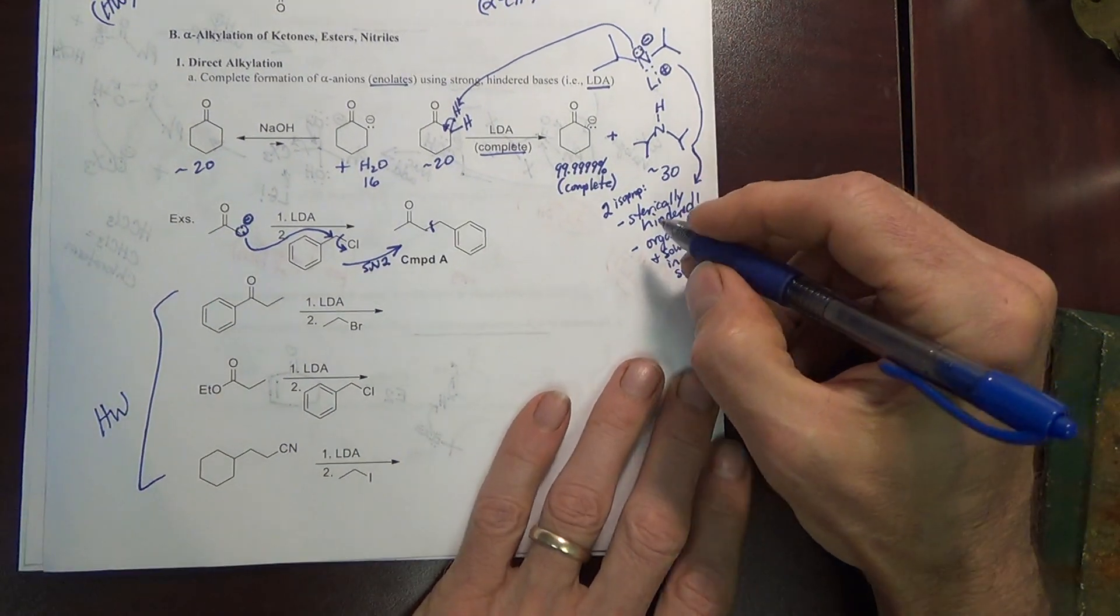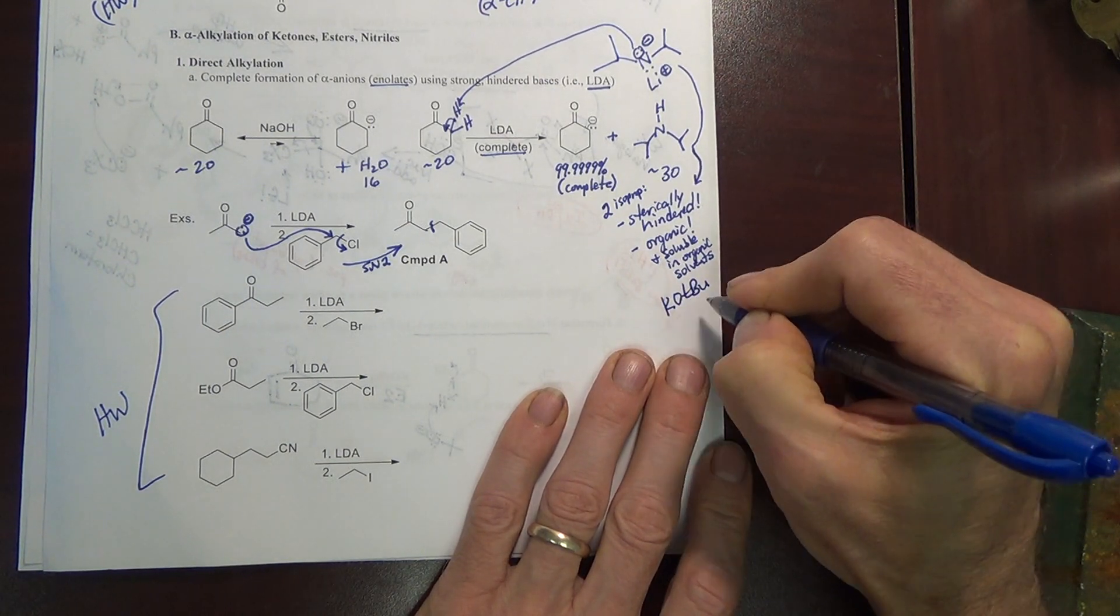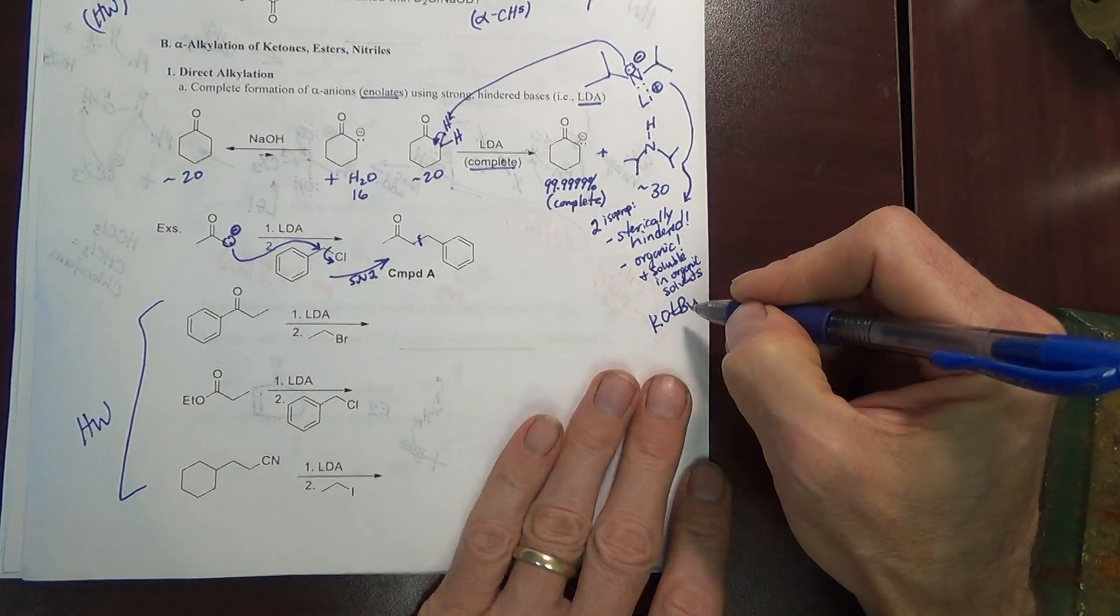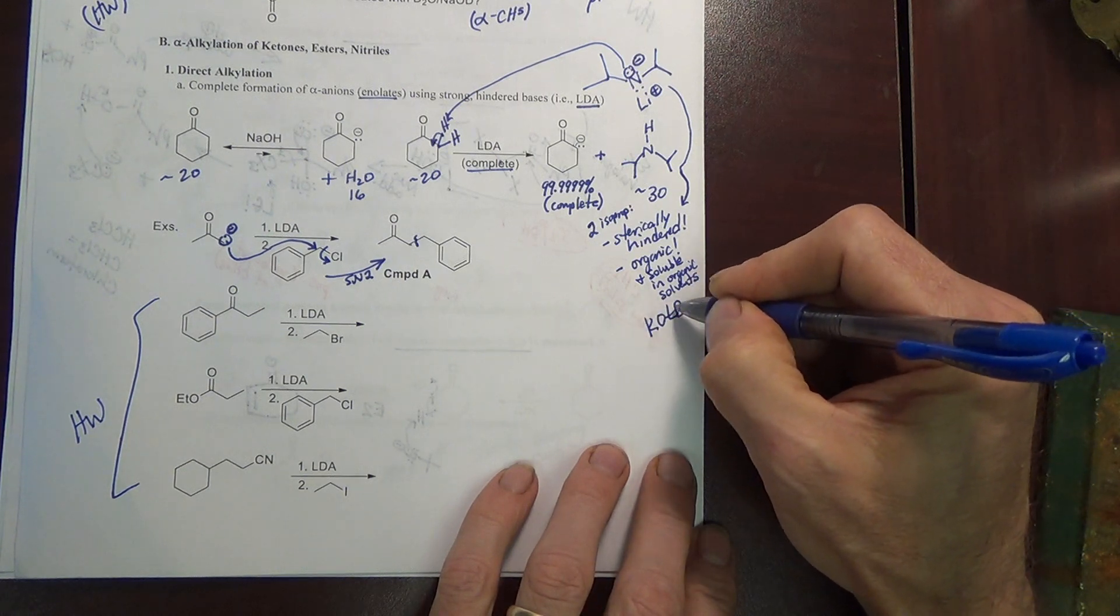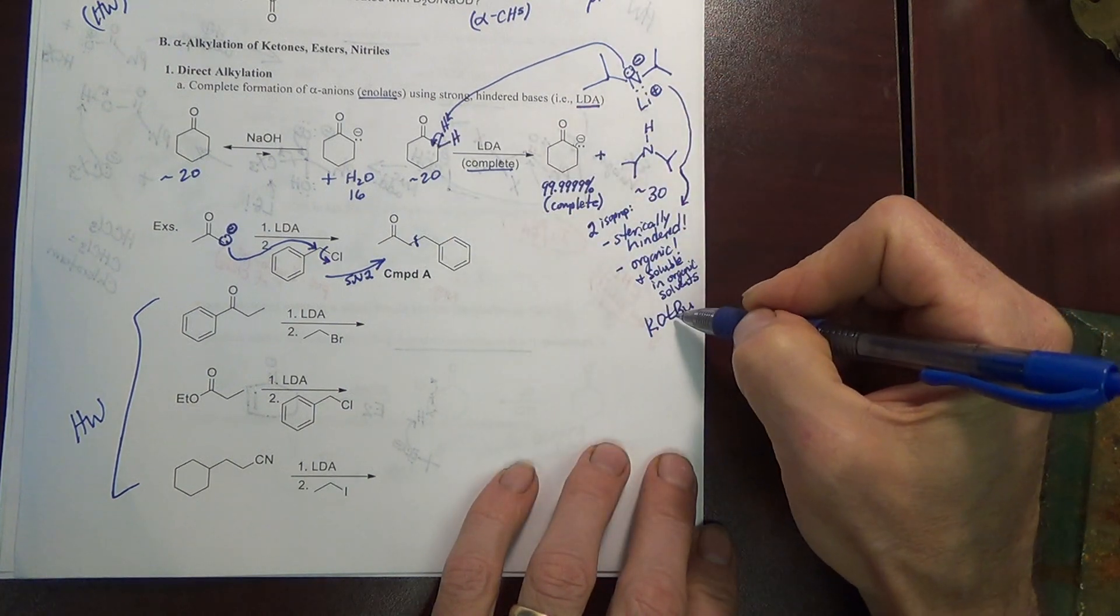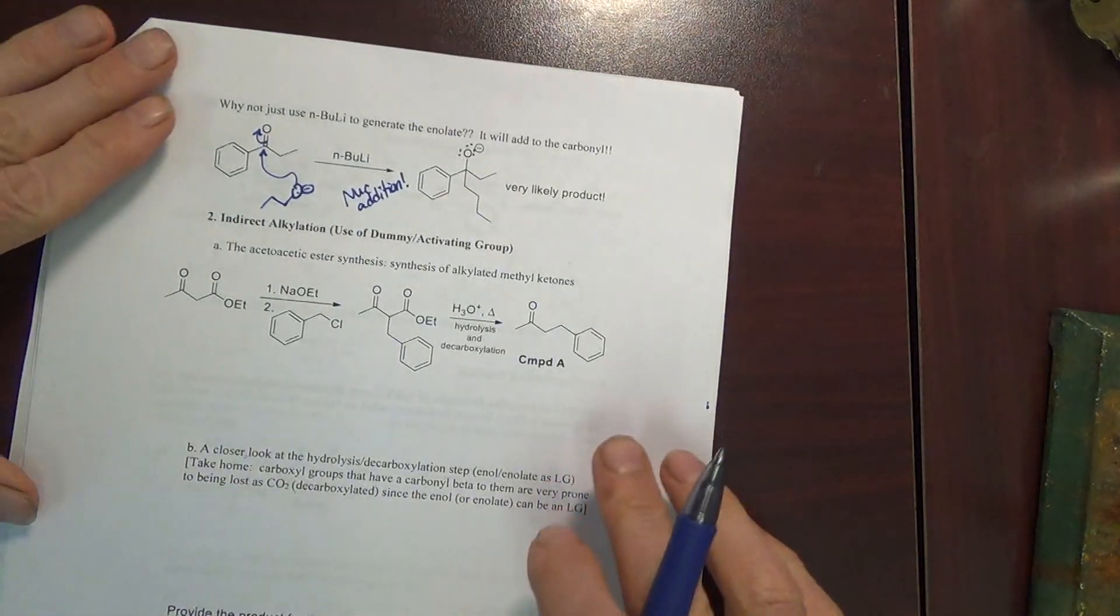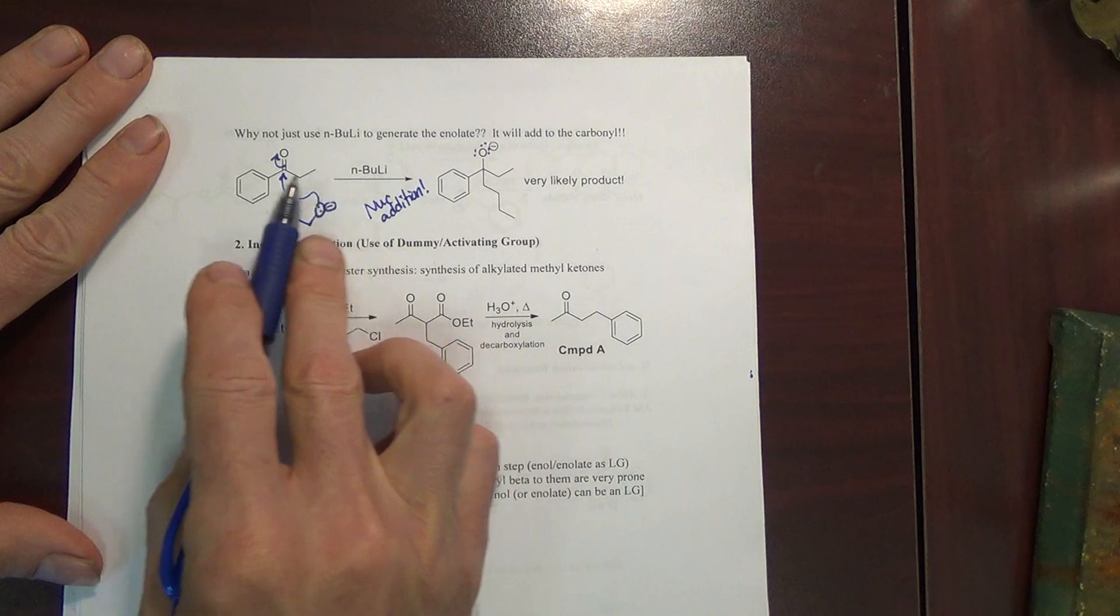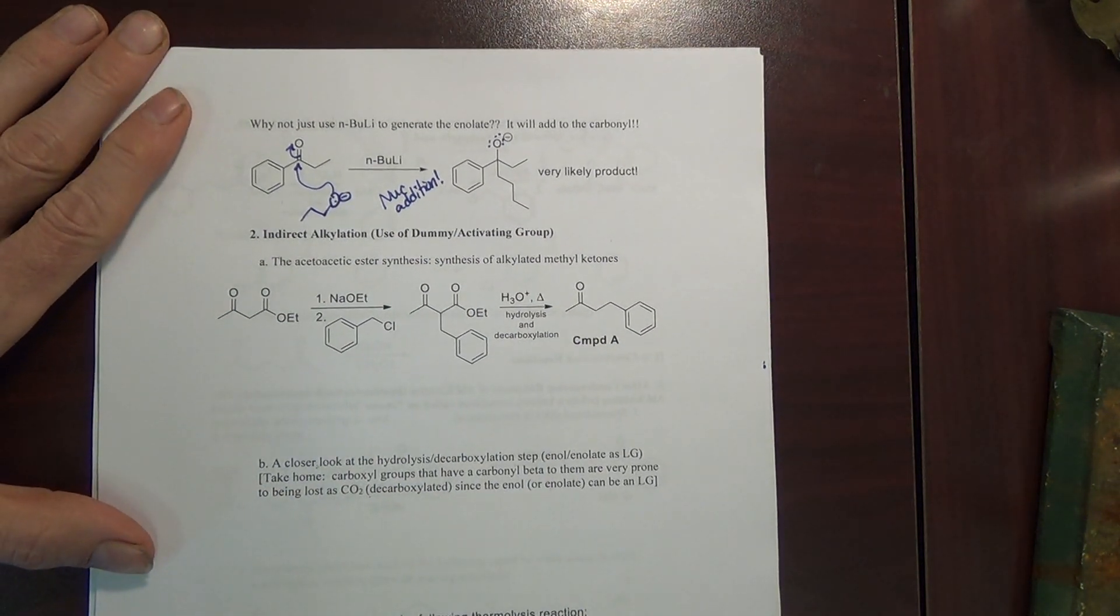The other sterically hindered base that's very commonly used is tert-butoxide, such as potassium tert-butoxide or sodium. But the oxygen anion is not quite as basic. Commonly used for E2, it's strong enough to do E2, but it's not strong enough to do enolate chemistry. N-butyl lithium, not a good choice of base, it's going to add to your carbonyl, game over.